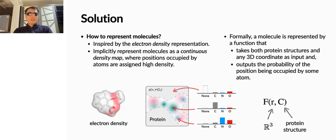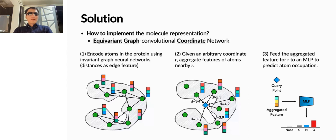Inspired by the electron density representation, we designed to implicitly represent molecules as a continuous density map, where positions occupied by atoms are assigned high density. Formally speaking, a molecule is represented by a function that takes both protein structure and any 3D coordinates as inputs, and outputs the probability of the position being occupied by some atom. We represent molecules in the context of proteins as continuous density maps.